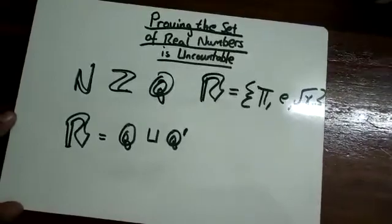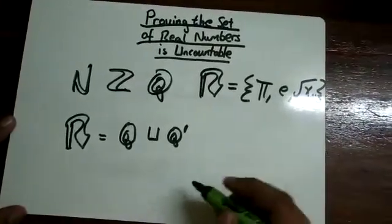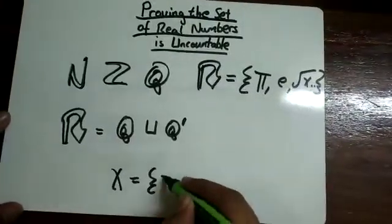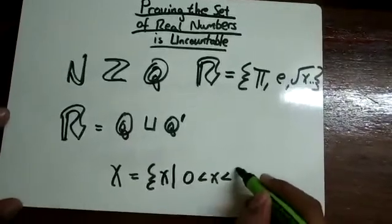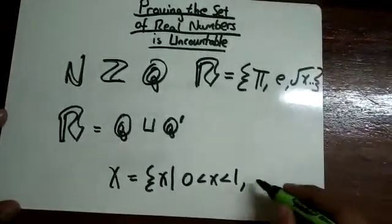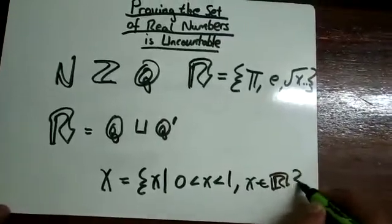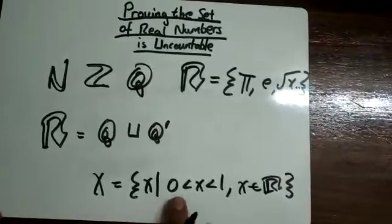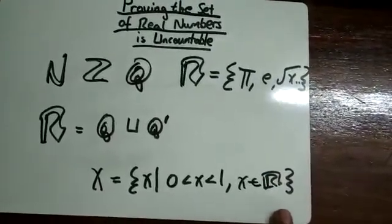To make things simple, we will consider all real numbers between 0 and 1. So let's call that set x. And x is the set of all real numbers that are greater than 0 and less than 1. So this statement is read as the set of all x such that 0 is less than x, which is less than 1, x is an element of R.